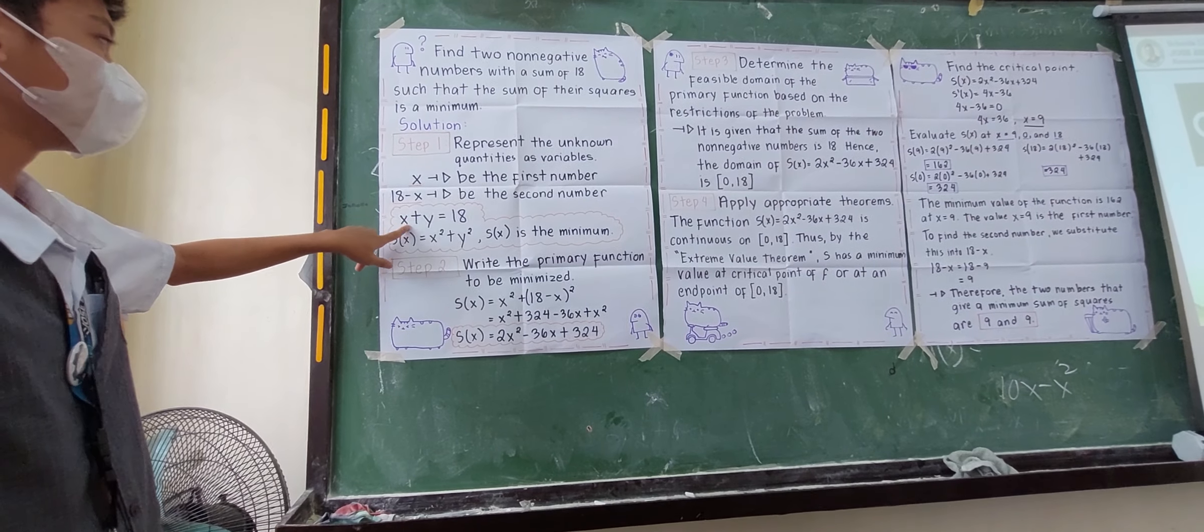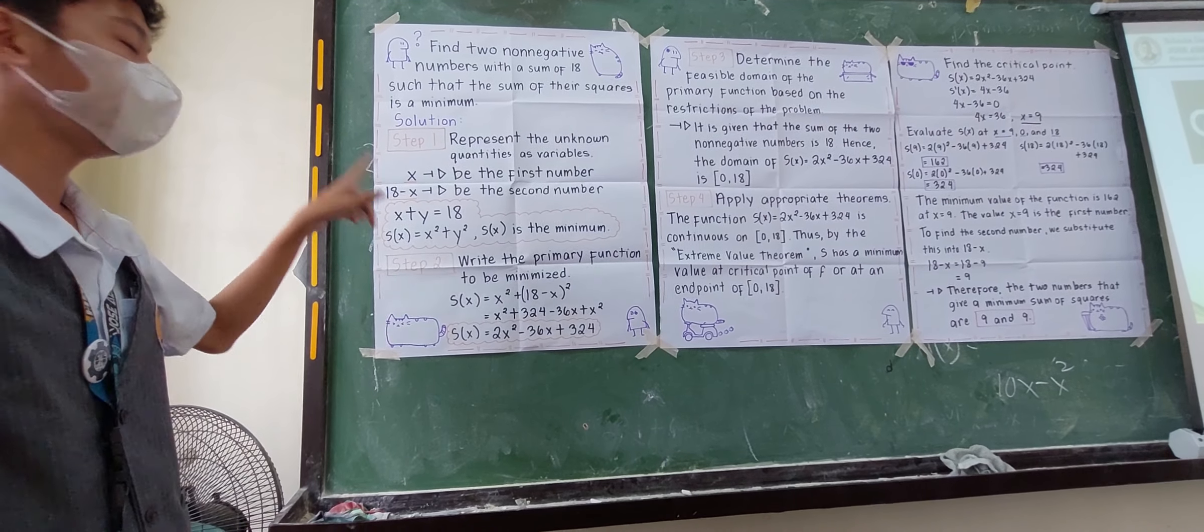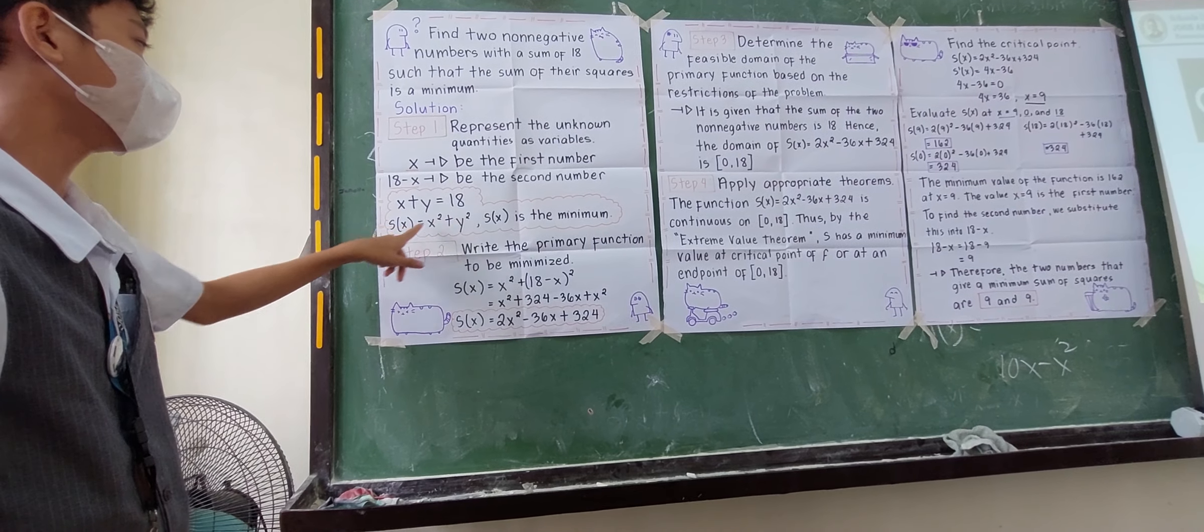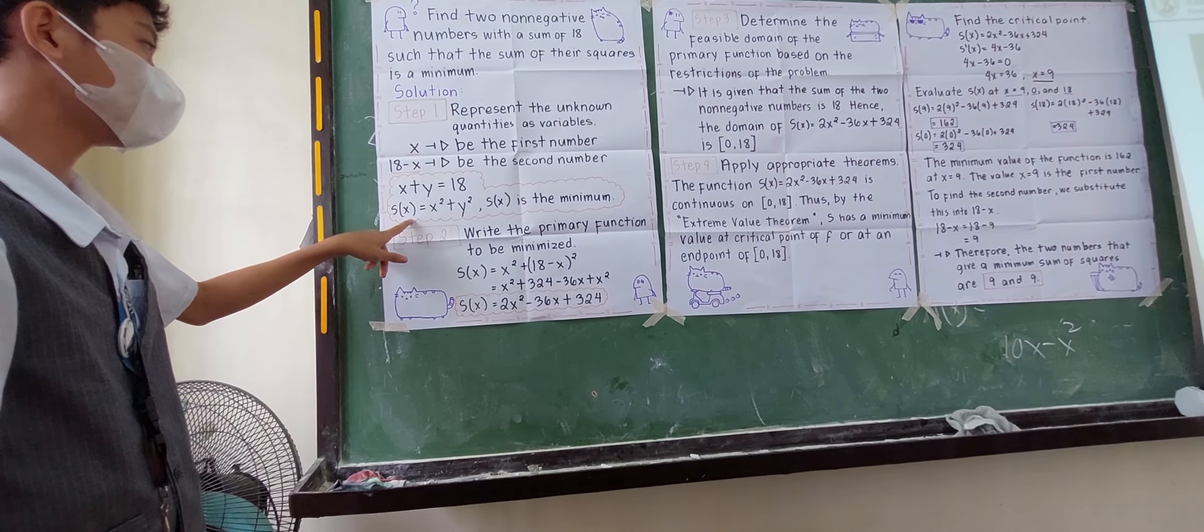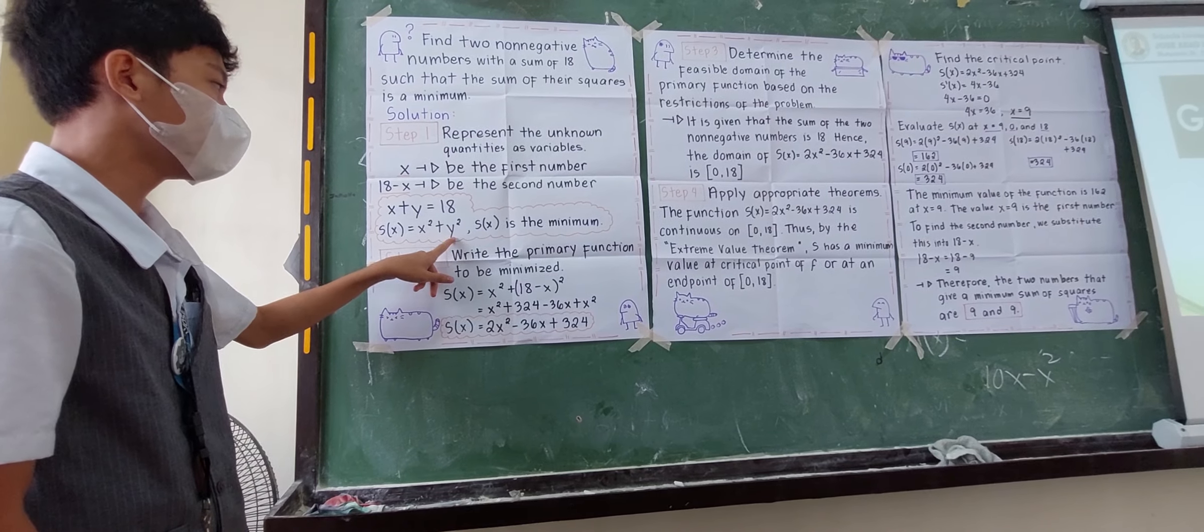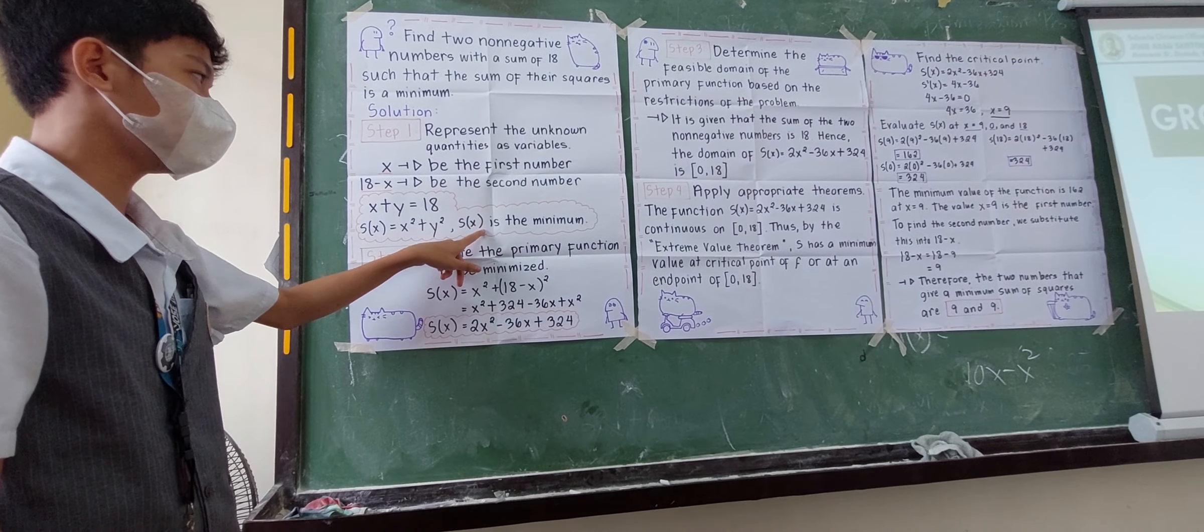So, here are the two equations I got. X plus Y is equal to 18, and S of X is equal to X squared plus Y squared, where S of X is the minimum value.